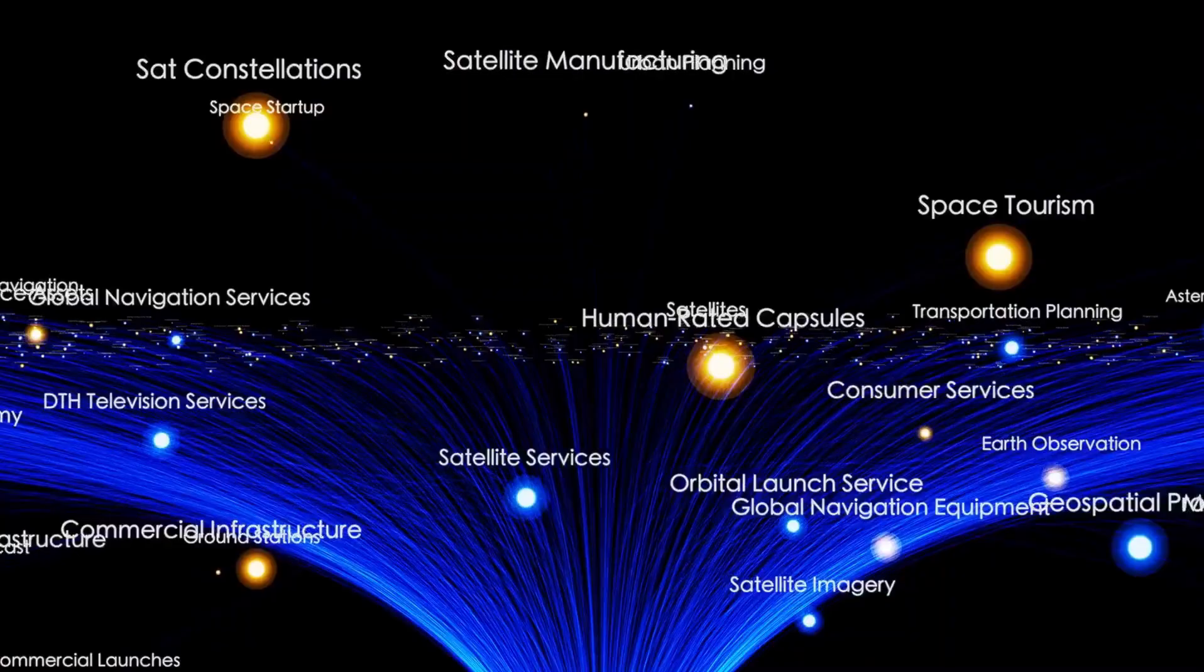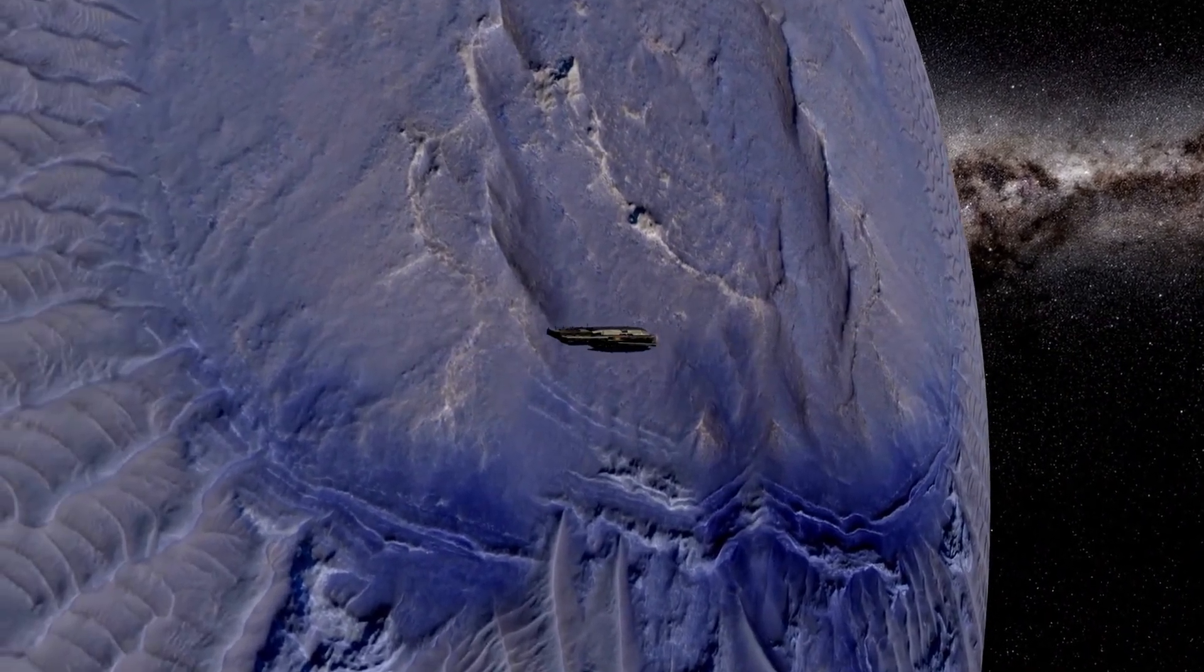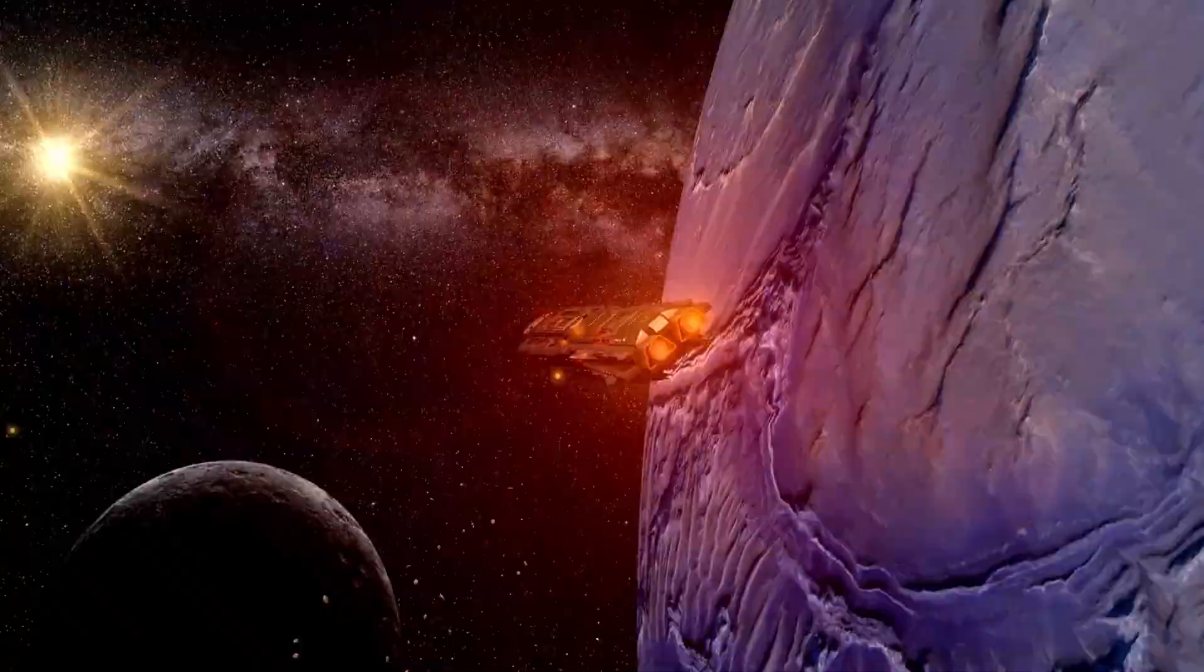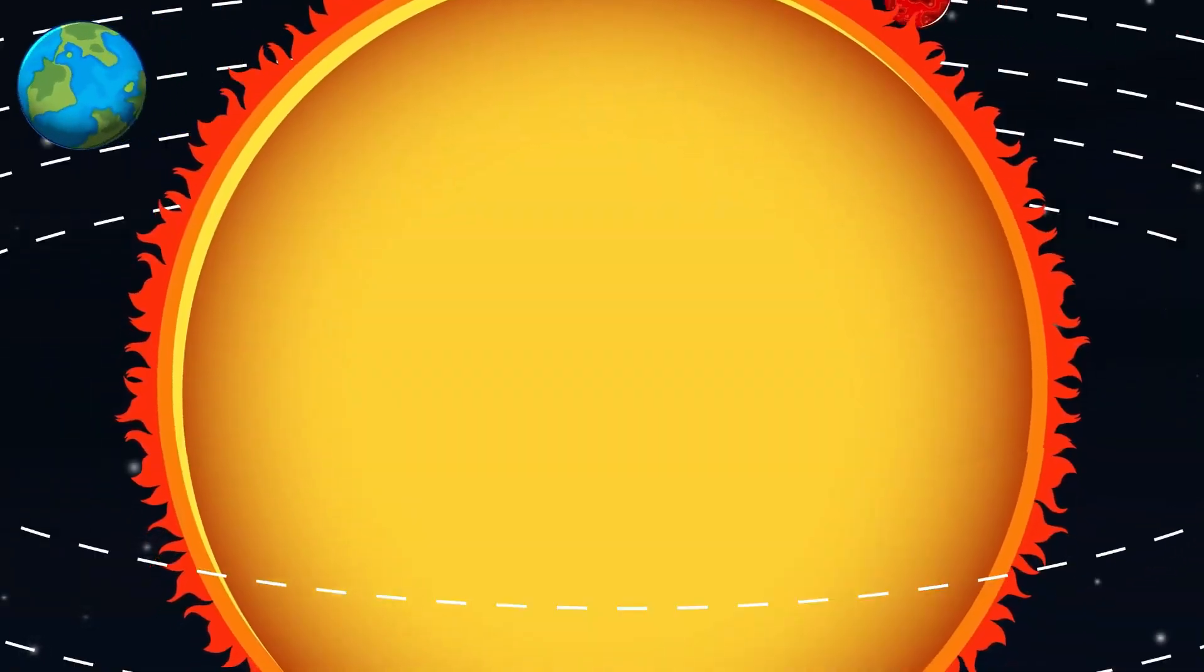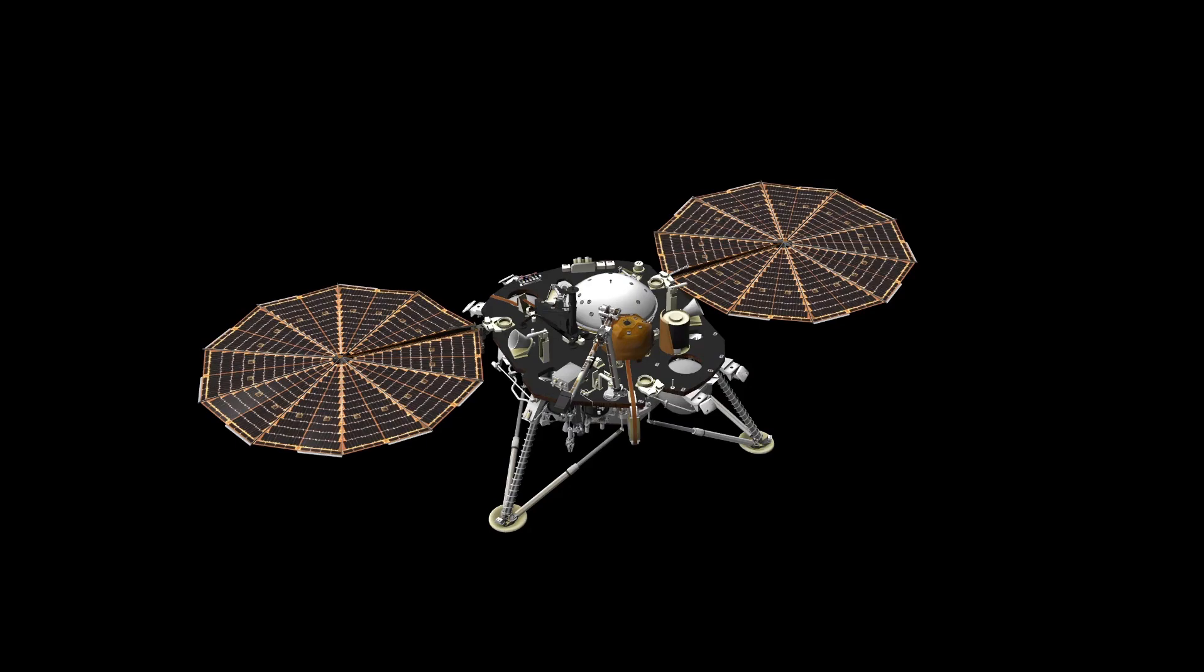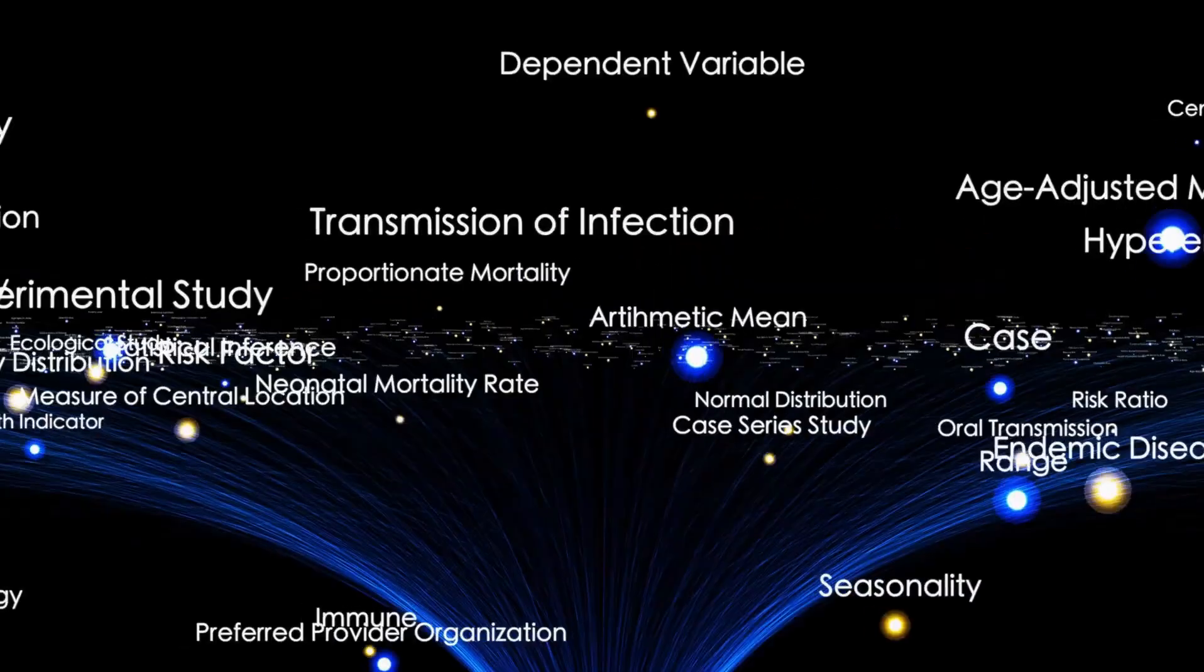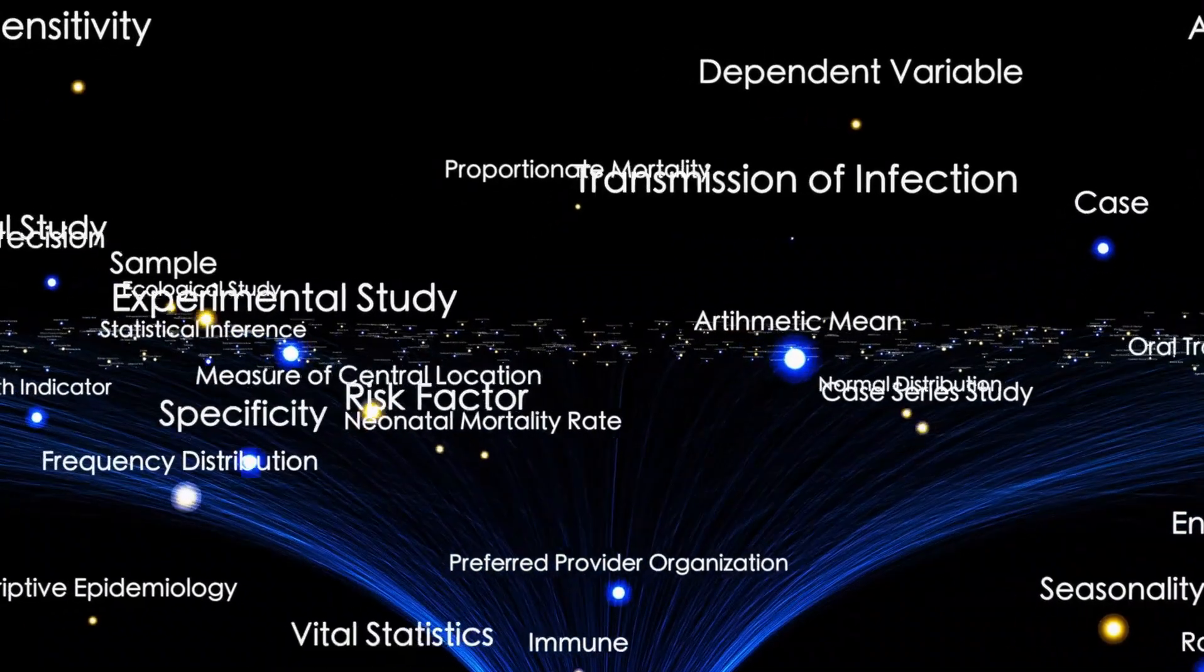In the past, studying interstellar plasma relied on random solar events, but Voyager 1 and 2 have changed that, giving us a treasure trove of data collected over decades. Their discoveries have illuminated the immense power of cosmic radiation and the interactions between solar and stellar particles, expanding our understanding of space.